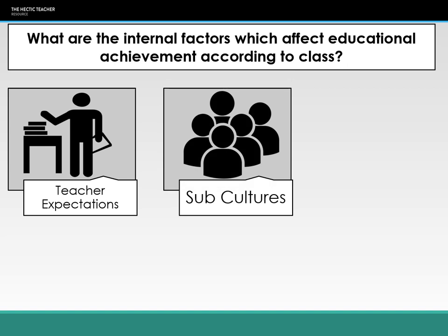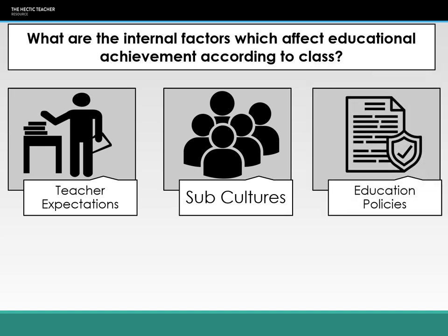We're also going to be looking at subcultures — pro and anti-school subcultures and how they relate to educational achievement by class. And finally, we're looking at education policies. When we're looking at internal factors, internal means the education system, not individual schools. And when we're looking at educational achievement, we're mainly focusing on GCSE level and A level, not really key stage two or lower.